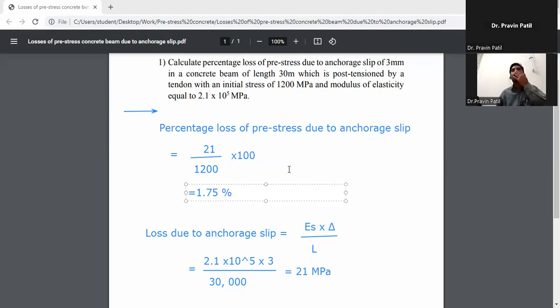So this is the percentage loss of prestress due to anchorage slip. This question was asked in the GATE exam 2007.